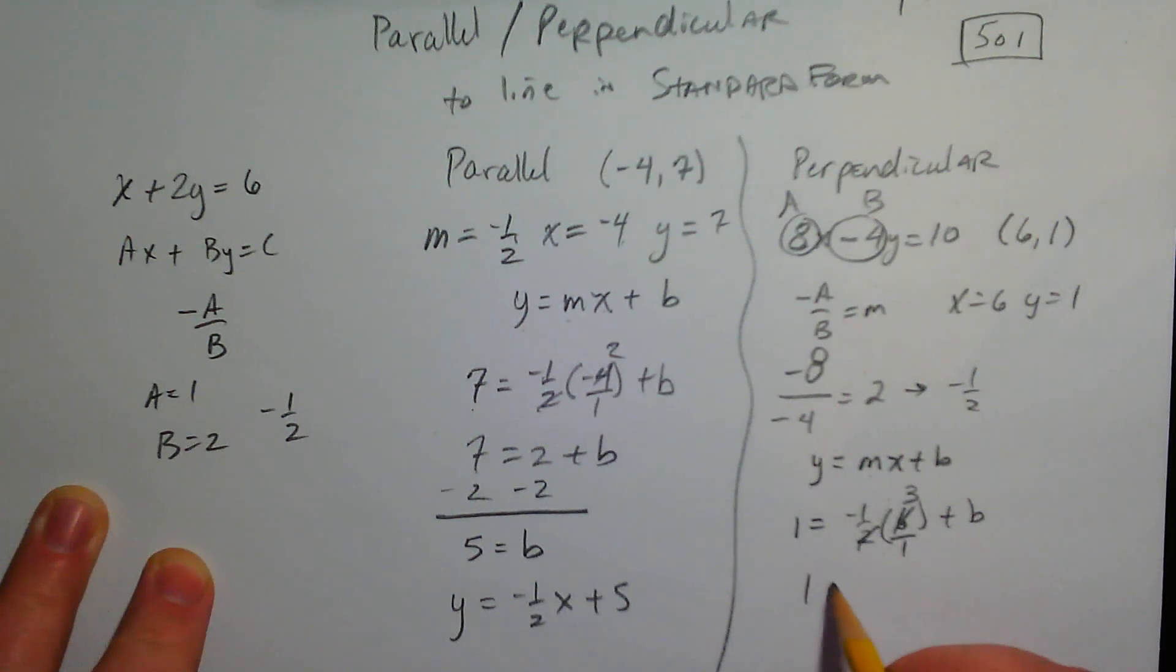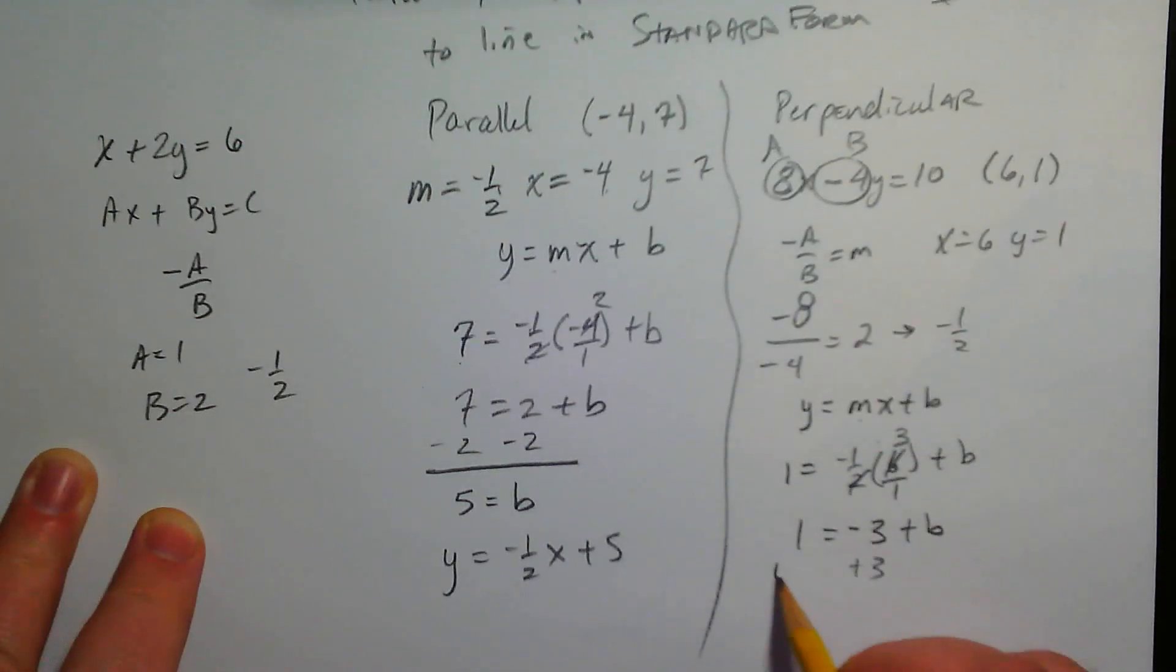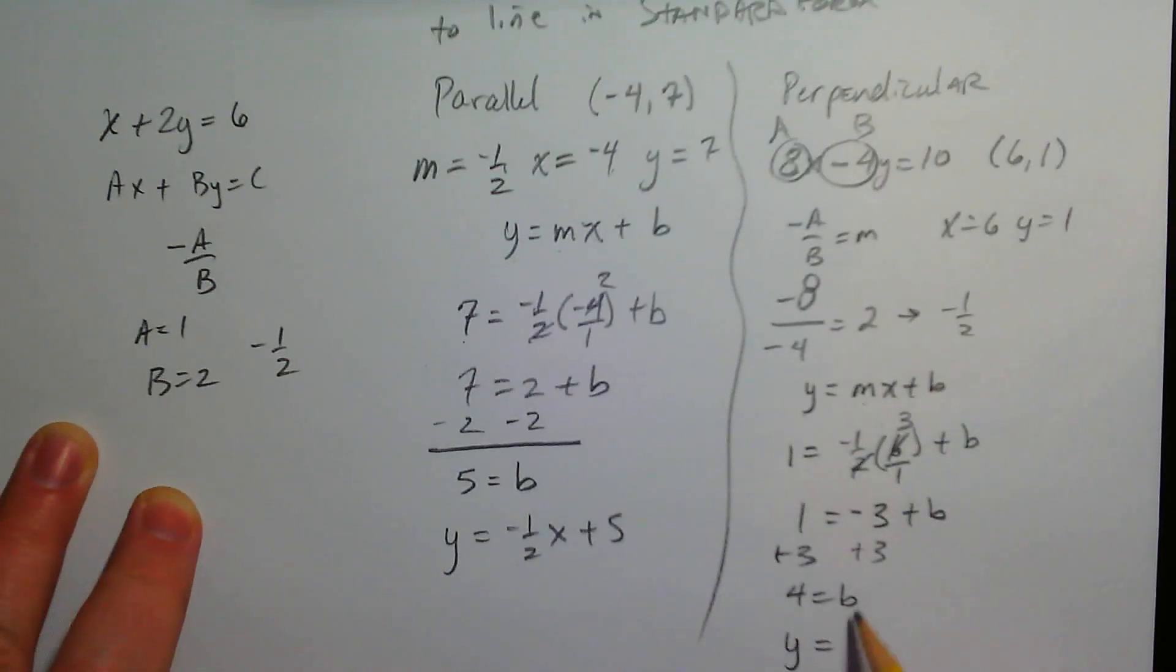Reduce, right? Negative times positive. Negative. So this is going to be 4, because 4 plus negative 3 is 1. You can do the work if you want. 4 equals b. So y equals negative one-half x plus 4.